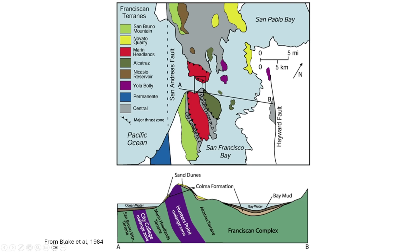Another view here showing the more regional setting. You can see all these different terrains shown with colors on the map. At the top you can see the different Franciscan terrains, with Alcatraz shown in the forest green color, sitting out in San Francisco Bay. In the cross-section below, you can see that the Alcatraz terrain and its sandstones lie more or less at the top of the package of Franciscan complex rocks that extend out to the west.